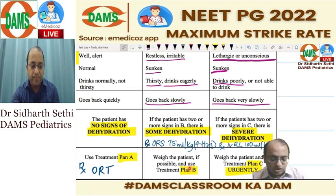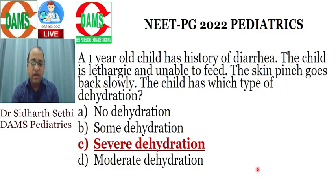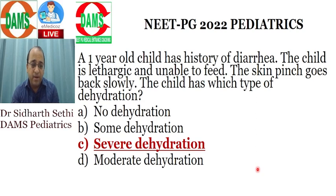The child in your exam was lethargic, drowsy, had sunken eyes, and turgor went back very slowly — this is severe dehydration, for which you give Ringer's lactate 100 ml per kg, called Plan C. Also remember zinc is a very important topic: in diarrhea we give zinc in addition to ORS — 20 mg per day for two weeks for children more than six months, and 10 mg per day for two weeks for children less than six months.